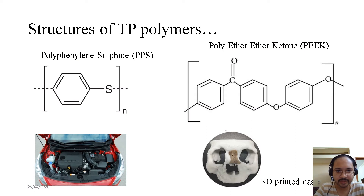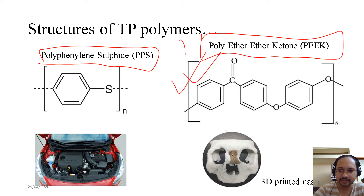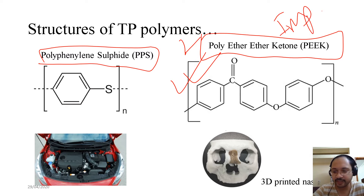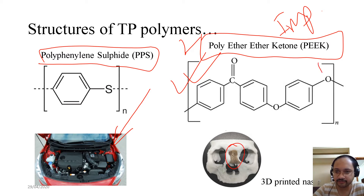Here we see polyphenylene sulfide (PPS) and polyether ether ketone (PEEK) — remember these structures, they are important. The application of PPS includes casings and containers, such as covers inside car components. For PEEK, an example shown is a 3D printed nasal bone made of this thermoplastic polymer.